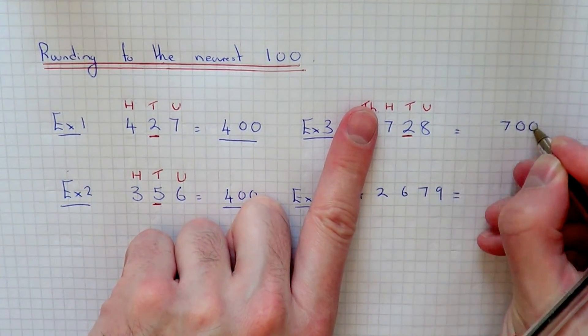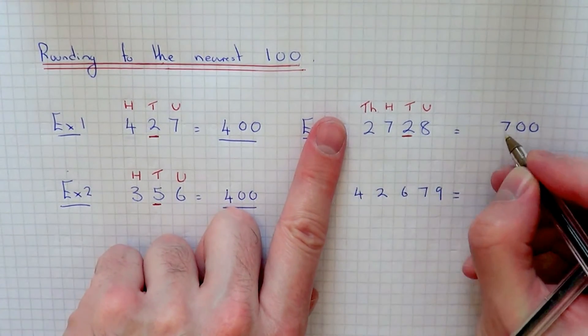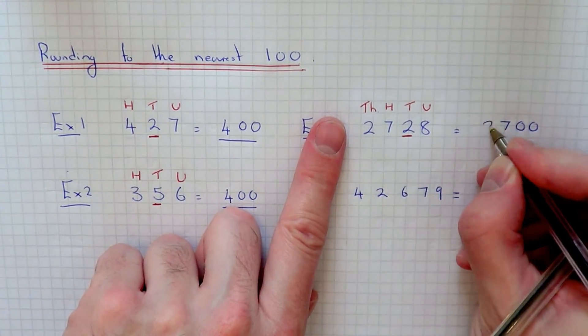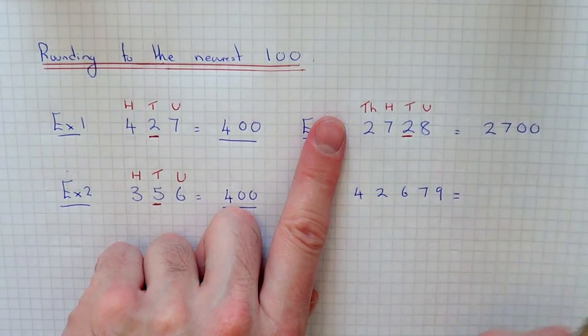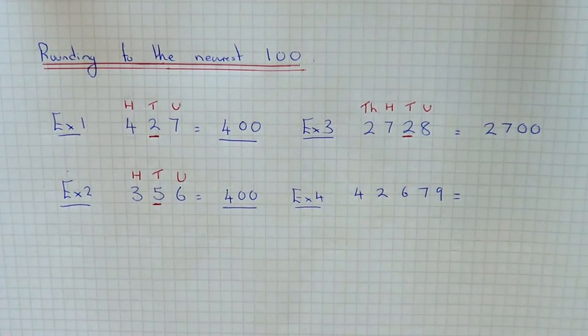Just remember to write in the thousands column. So the answer is 2,700.